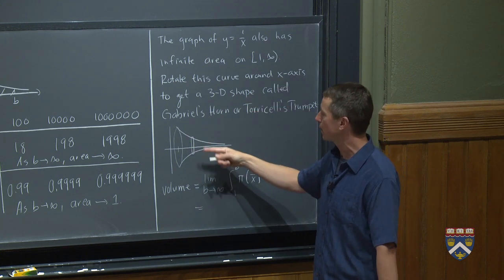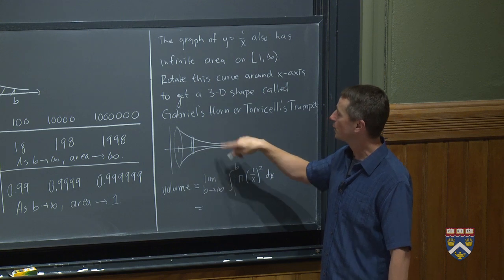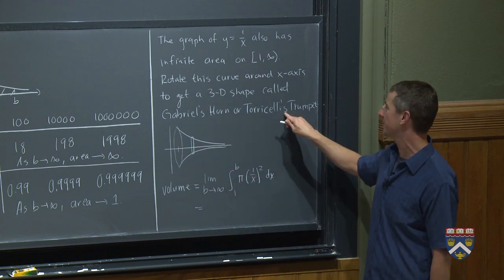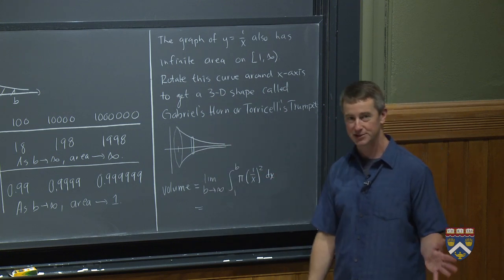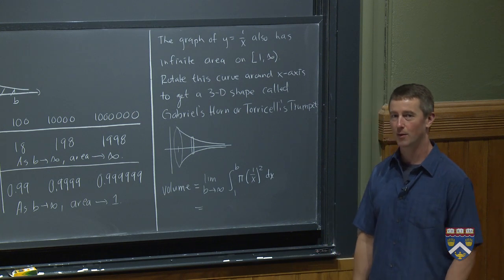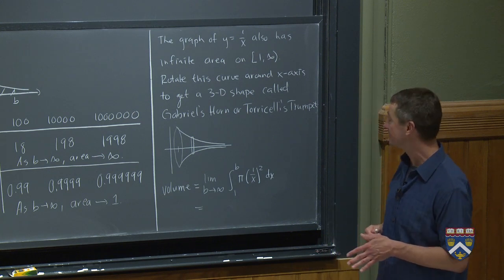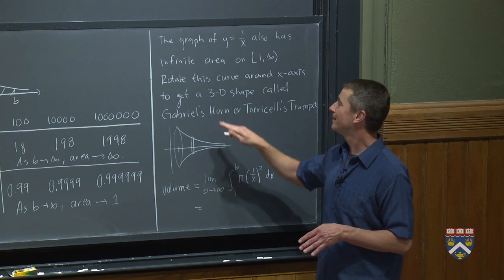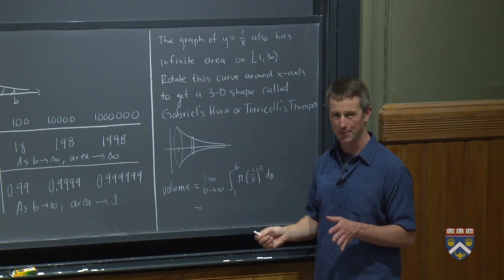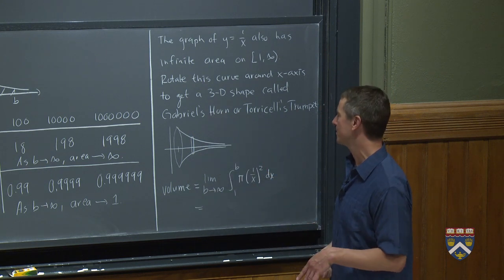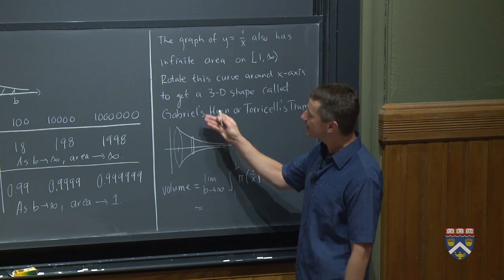So if we spin this 1 over x curve around the x-axis, we get a 3D shape, which originally was called or should be called Torricelli's trumpet because Torricelli was the mathematician physicist who investigated this shape. Often nowadays, it's more called Gabriel's horn. This is a reference to the Bible. And when we spin this around, well, we know that the area just of this much is infinite.